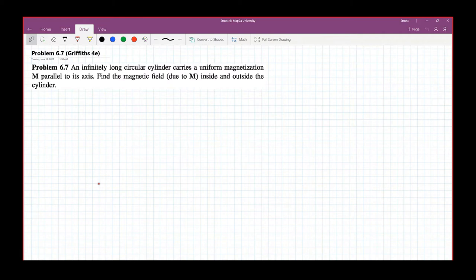Okay, take two. So problem 6.7 reads: an infinitely long circular cylinder carries a uniform magnetization, capital M, parallel to its axis. Find the magnetic field due to this magnetization inside and outside the cylinder.